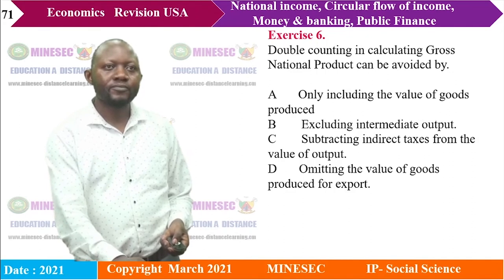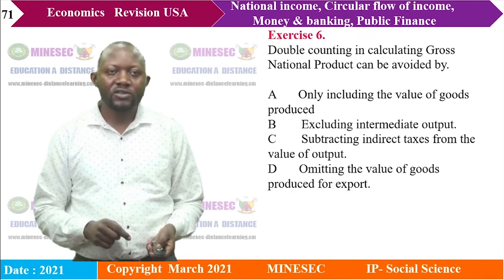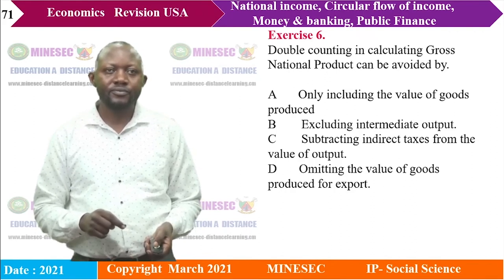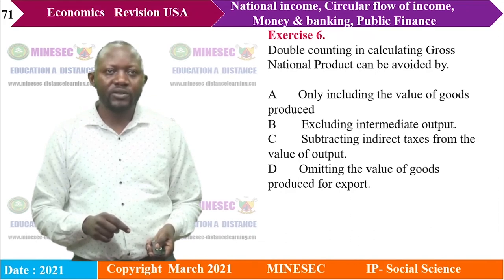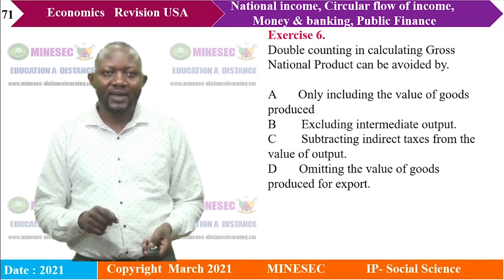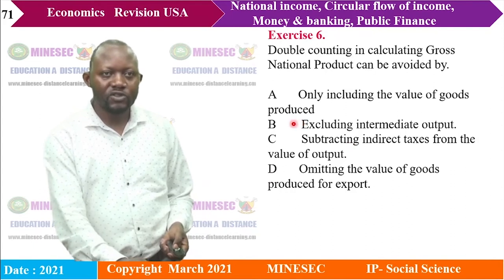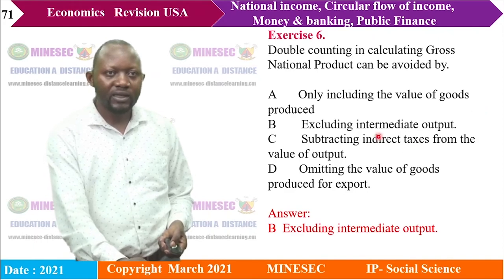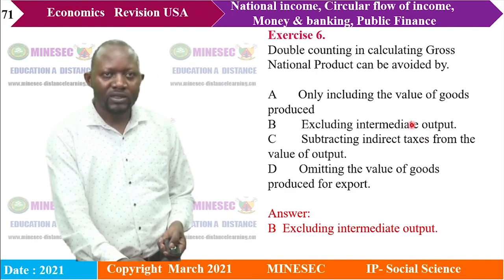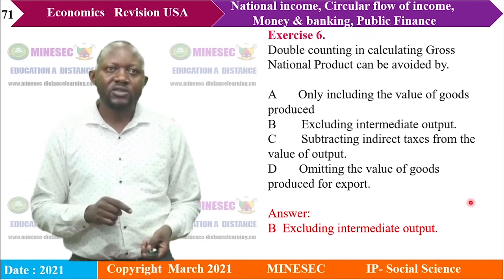Exercise 6: Double counting in calculating GNP can be avoided by: A) only including the value of goods produced, B) excluding intermediate outputs, C) subtracting indirect taxes, D) omitting exports. The right answer is B — excluding intermediate outputs. When intermediate outputs are included, it causes double counting; excluding them avoids it.